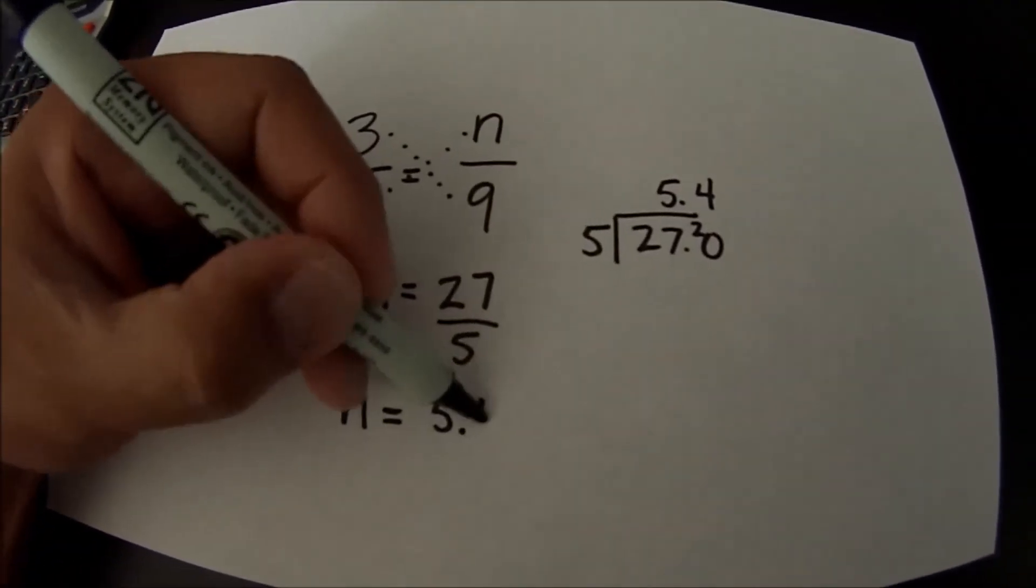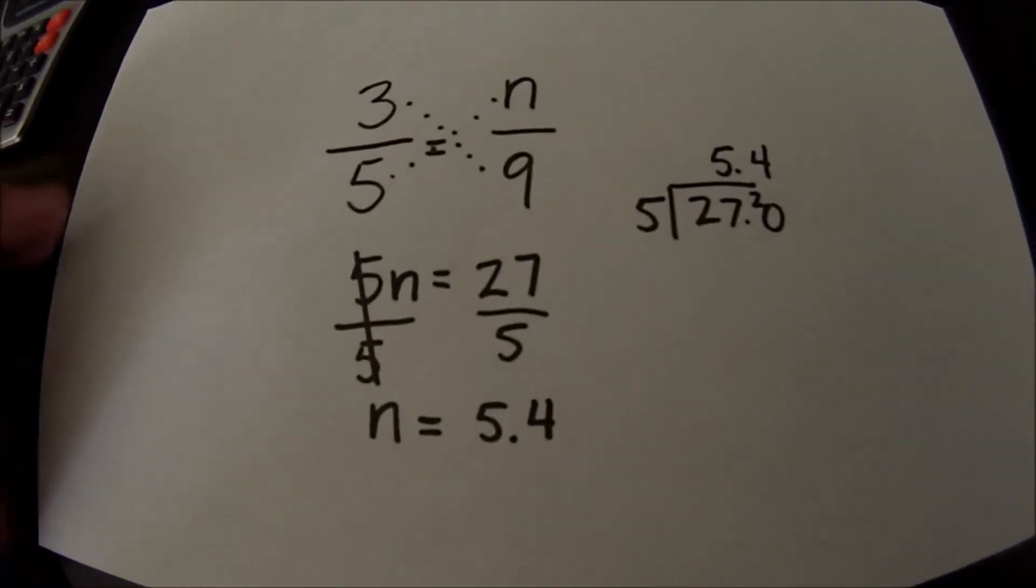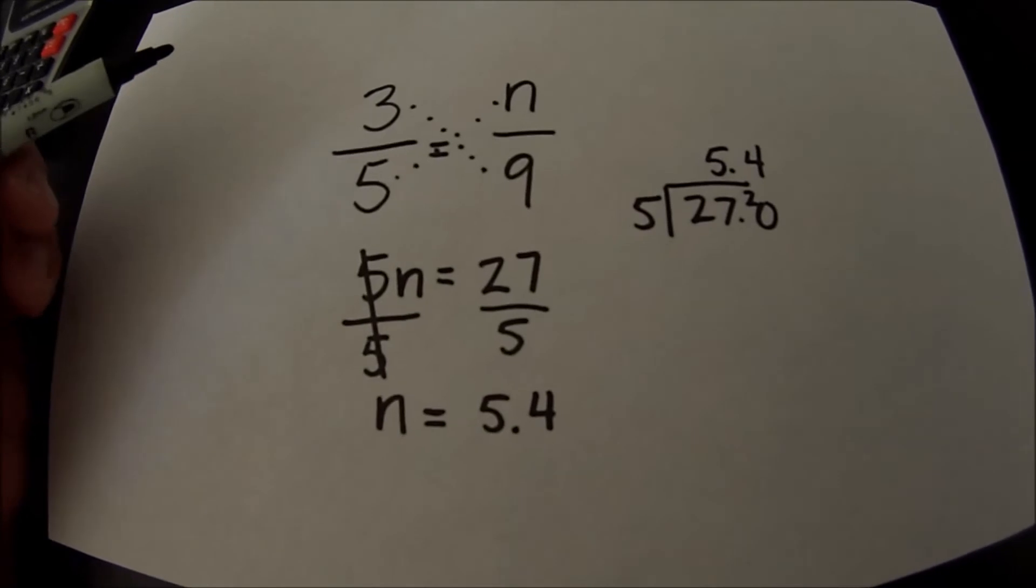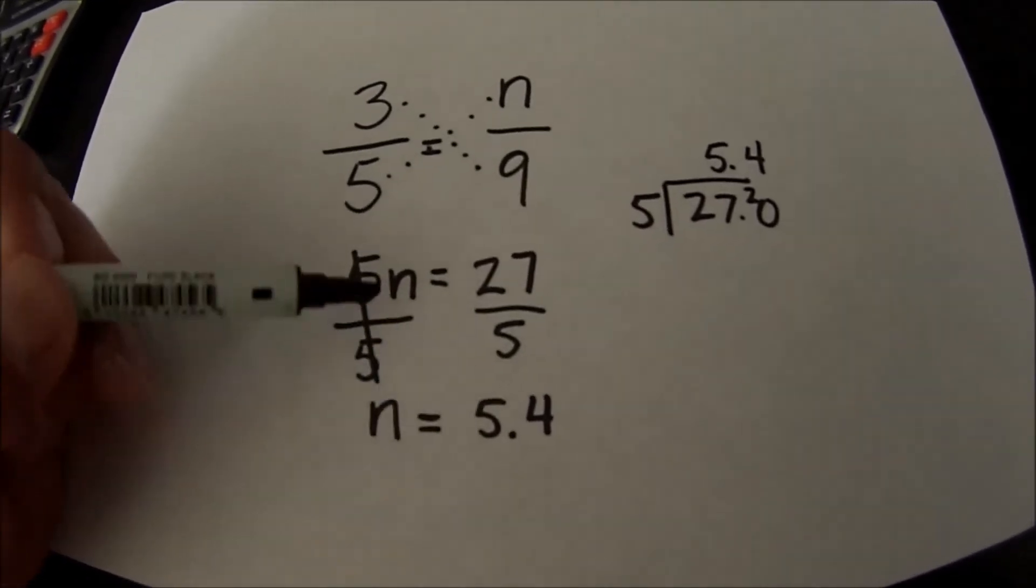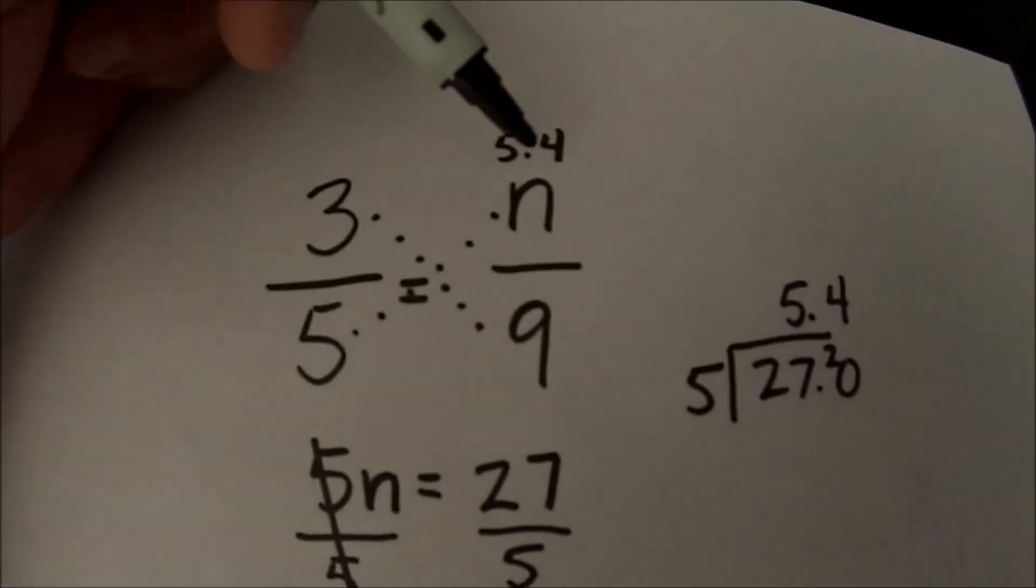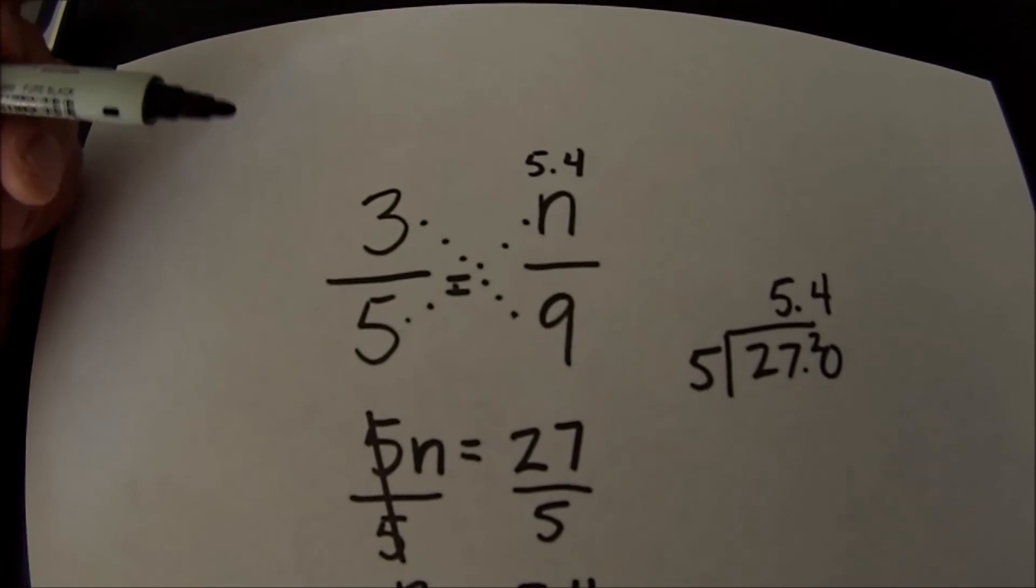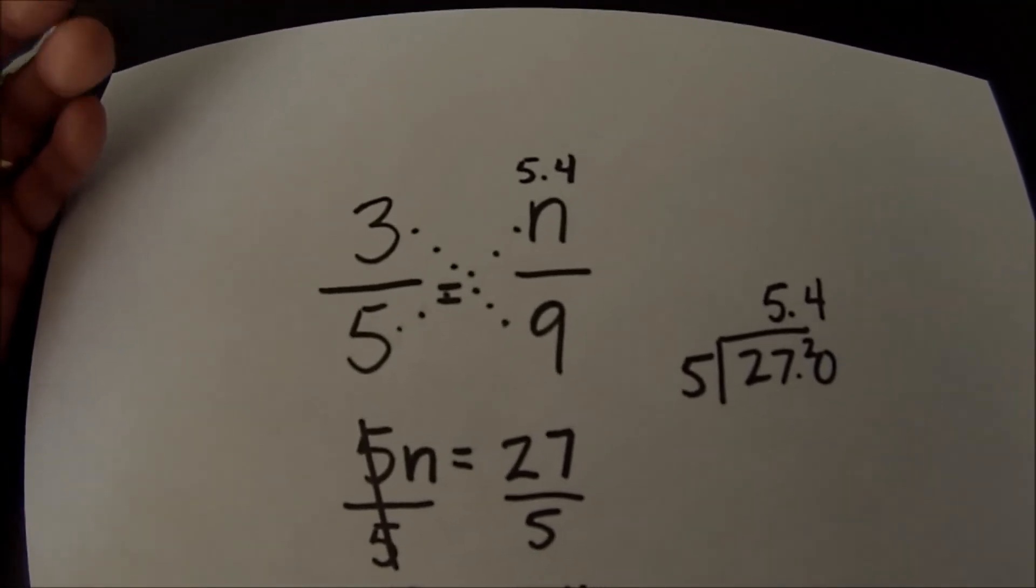So n equals 5.4 but you might say well how do I know that's right? So what we can do is basically put this 5.4 up here where n is and then we can now just cross multiply and just double check if we get the same number we are correct.